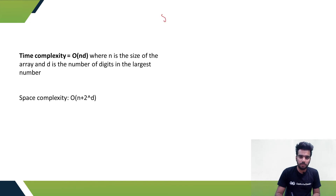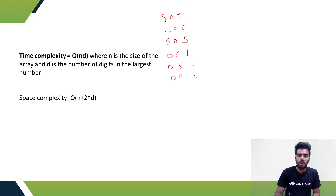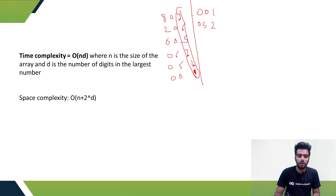Let's see an example. Given values: 804, 206, 005, 064, 052, 001. After the first iteration, radix sort sorts by the units digit: 001 (smallest), then 052, then 804, 064 (both have 4), then 005, then 206. Since 804 comes first in the input, it is placed before 064.